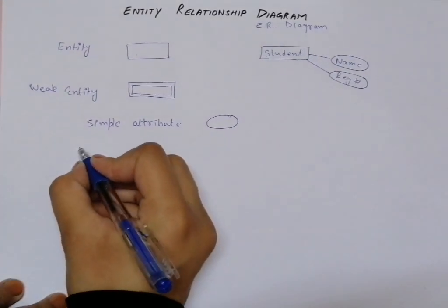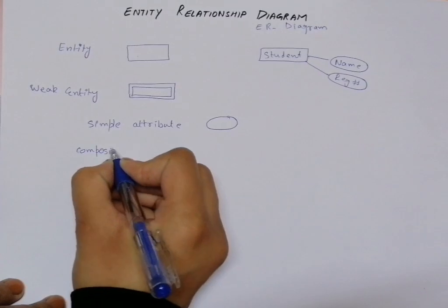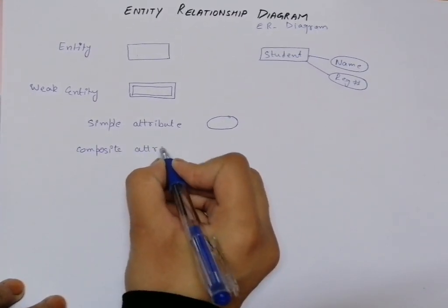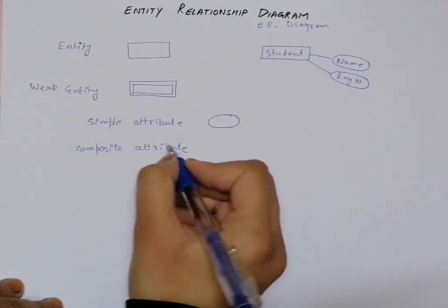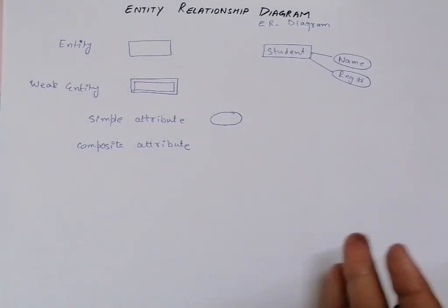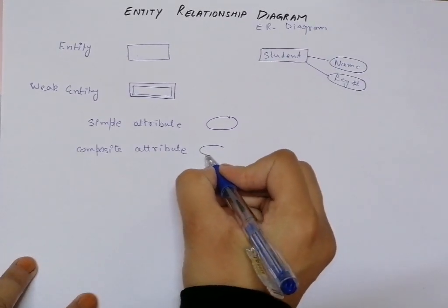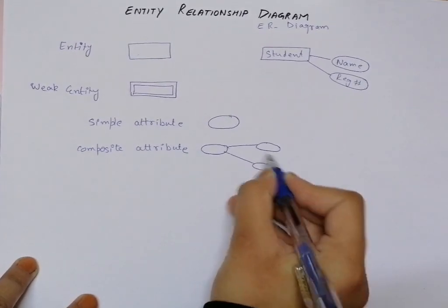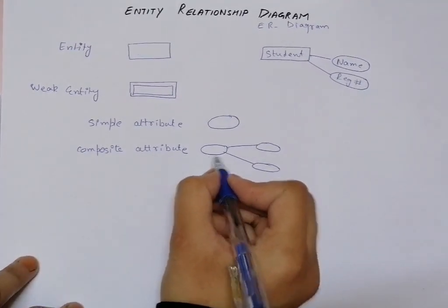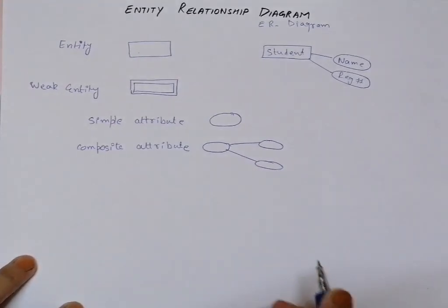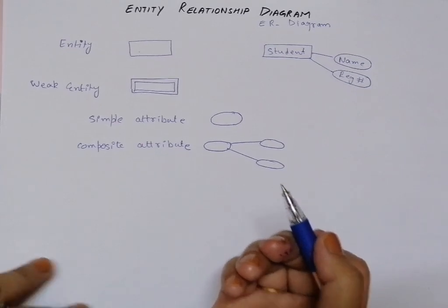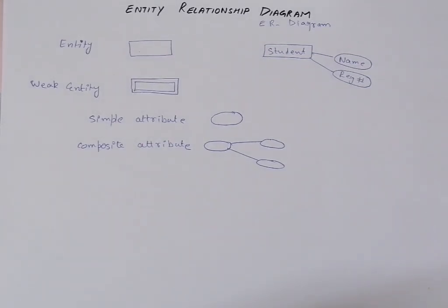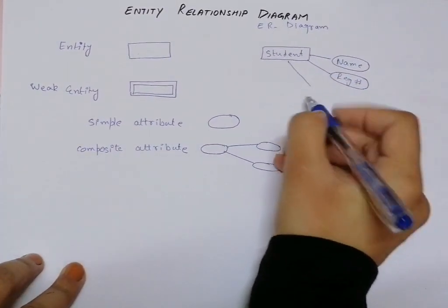The second type of attribute is a composite attribute. These are attributes that comprise multiple parts or multiple sub-attributes. In order to represent a composite attribute, I draw a main oval with additional ovals attached to it — these additional ovals can be of any number. For example, let's say I have an entity 'student' and I have to represent the attribute 'address'.